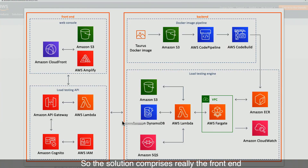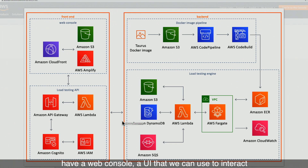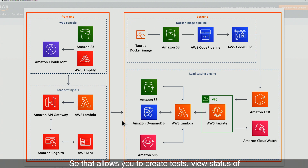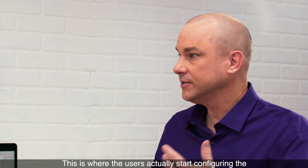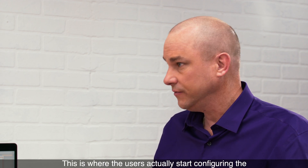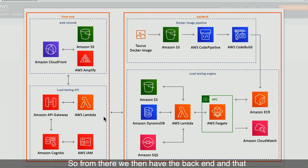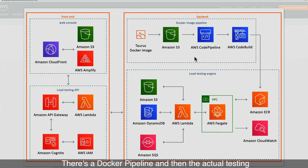The solution comprises really of a front end and a back end. Starting with the front end, we have a web console — a UI — that we can use to interact with the solution, and then an API. That allows you to create tests, view the status of a test, rerun tests, delete tests, that type of operation. The UI comes from the CloudFormation template, and this is where users actually start configuring the test itself. The back end comprises really of two things: a Docker pipeline and the actual testing engine itself.